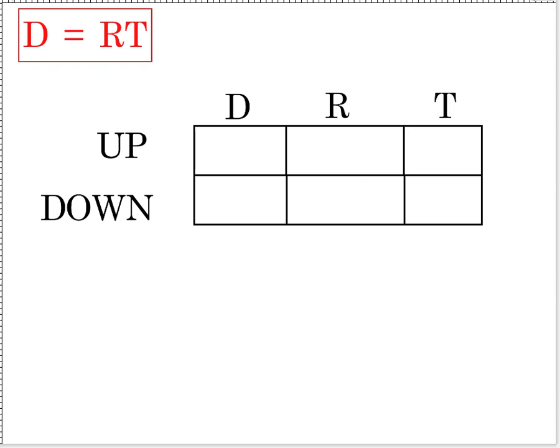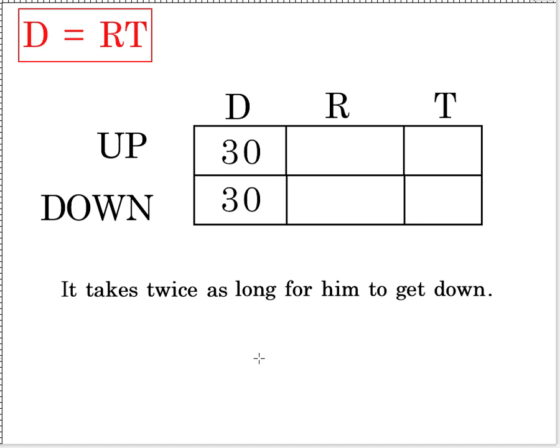Now, our distance, we've already agreed. The escalator does not change its length. It's 30 steps up. It's 30 steps down. The rate here is a more difficult thing to get. So I'm going to go for the time. And the time, there was only this sentence. It takes him twice as long, it takes twice as long for him to get down. Now, we don't have any numbers. So we're going to have to go to a variable here. It takes twice as long for him to get down. So if we call going up t, it's going to take twice as long to get down. So it's going to be 2t. And there you go. We're two thirds of the way home.